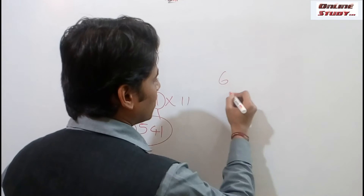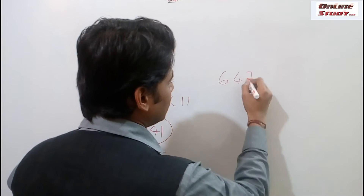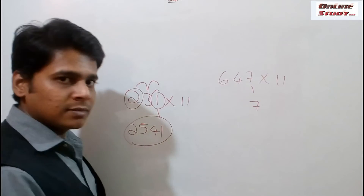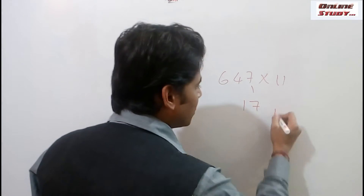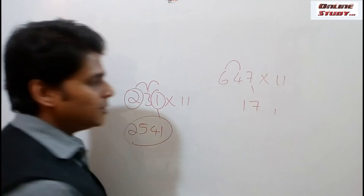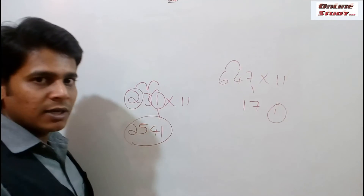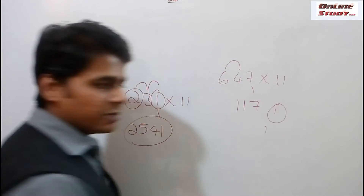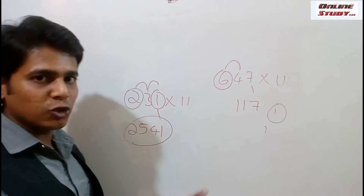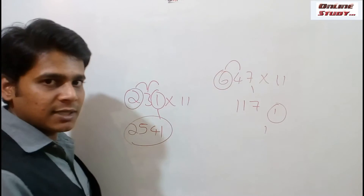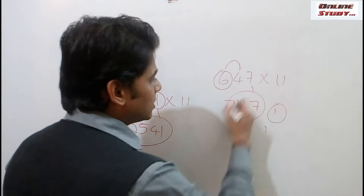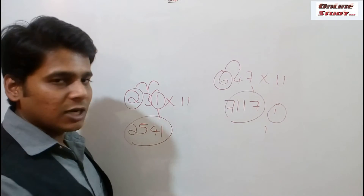Take for example 647 into 11. Place 7 as it is. 7 plus 4 is 11 — we will place 1 and 1 will be carried forward. The next step is add 4 plus 6, that is 10. And since we have a carry forward of 1, 10 plus 1 is 11 — we will place 1 and 1 will be carried forward. The final step is we need to place 6 and since we have a carry forward, we add them: 6 plus 1 is 7. So the multiplication of 647 into 11 is 7117.